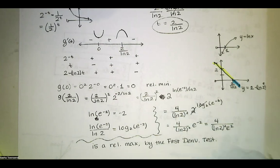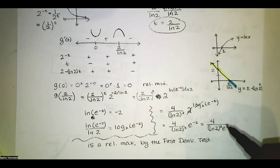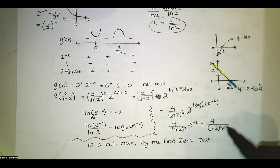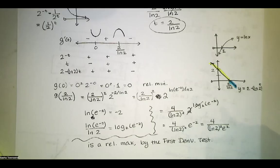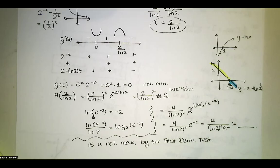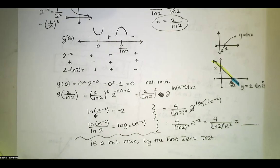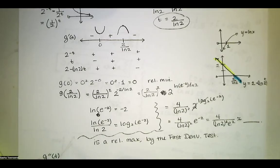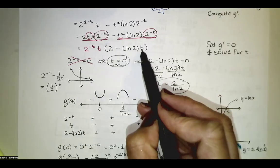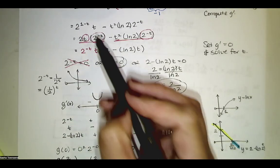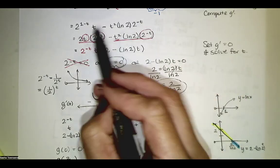Now what about concavity? We can compute the second derivative g double prime. This is the derivative with respect to t of 2t times 2 to the one minus t minus t squared times natural log of 2 times 2 to the negative t. The first expression requires the product rule: the derivative of 2 to the one minus t is natural log of 2 times 2 to the one minus t times negative one by the chain rule. For the second expression, we factor out negative natural log of 2 and apply the product rule to t squared times 2 to the negative t.